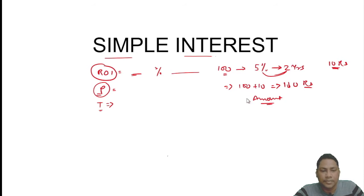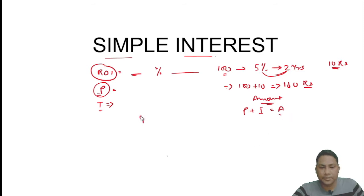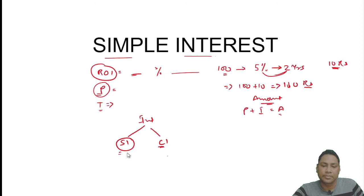The amount consists of the principal plus interest. Interest is of two types: simple interest and compound interest. Today we will discuss simple interest only; compound interest will be discussed on another day.